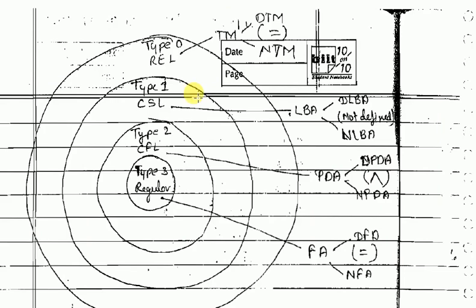We define this model by this diagram. There are very few languages which are accepted by type 3, that is regular language or regular grammar. All those languages accepted by type 3 are also accepted by type 2, that is context-free language. All languages accepted by regular and context-free language are also accepted by context-sensitive languages. And all those languages accepted by type 1 are also accepted by type 0, that is recursive language.